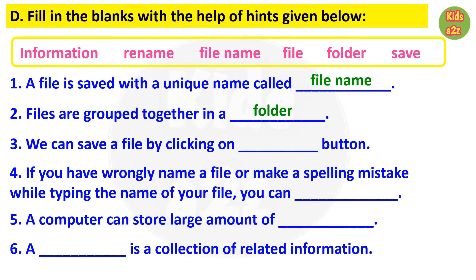Question 4: if you have wrongly named a file or made a spelling mistake while typing the name of your file, you can — answer is rename. Question 5: a computer can store a large amount of — answer is information. Question 6: a blank is a collection of related information — answer is file.